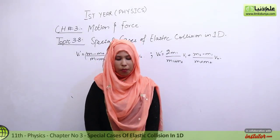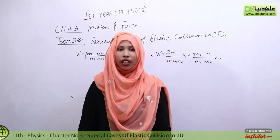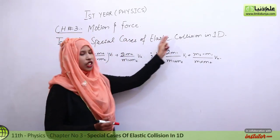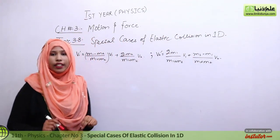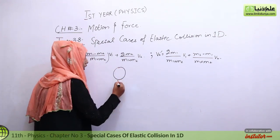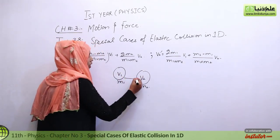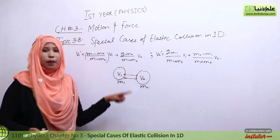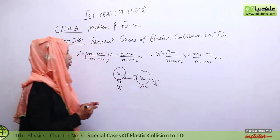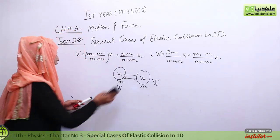Assalamualaikum students. Today we will start topic number 3.8, sub-topic: the special cases of elastic collision in one dimension. In the last lecture, we covered elastic collision in one dimension, and we concluded two values. Our two balls of mass m1 and m2 had initial velocities v1 and v2. After collision, mass 1's velocity is v1' and mass 2's velocity is v2', and their values have been derived and written here. Now let's discuss the special cases.